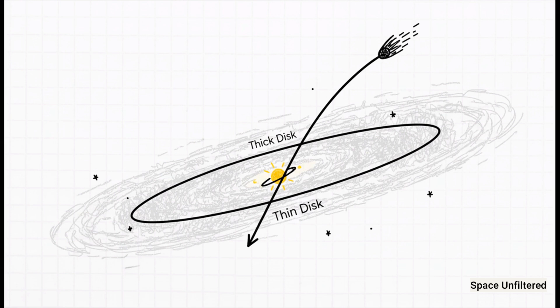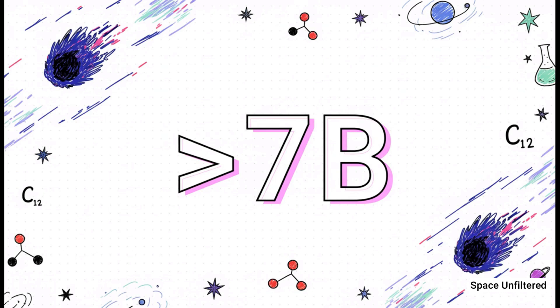Instead, its high vertical velocity suggests it belongs to the thick disk, a more diffuse halo of older stars that orbit the galactic center. This has a staggering implication. The stars in the thick disk are ancient.